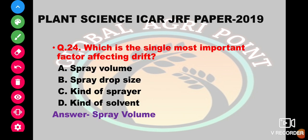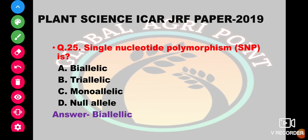Which is the single most important factor affecting drift? The options are spray volume, spray drop size, kind of sprayer, or kind of solvent. The answer is spray drop size. SNP (single nucleotide polymorphism) is biallelic, triallelic, monoallelic, or nullallelic. The answer is biallelic.